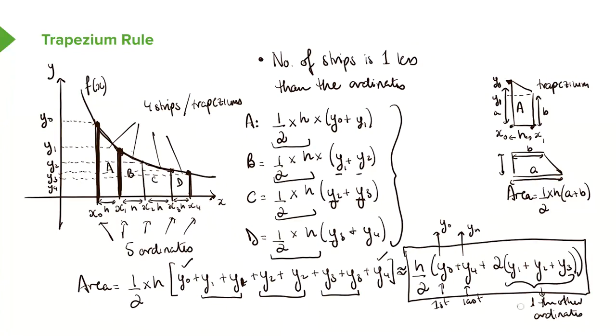So basically, that's what the formula states. You have h over 2, brackets, first y + last y + two times all the other ordinates. In our case, obviously, we have four strips and five ordinates, so this is what it looks like. We've put numbers in, but in any other case, you can always just work them out by substituting the numbers in.